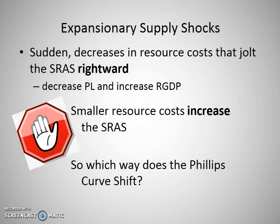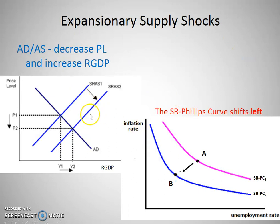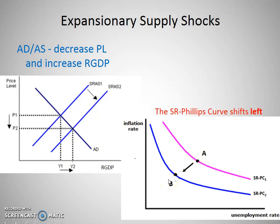The other curve on the ADAS model is the SRAS. Shifting the SRAS in the short run is usually caused by supply shocks. An expansionary supply shock is where the SRAS shifts to the right — this happens when input costs used in the production of most goods decrease. When the SRAS shifts to the right, the price level goes down and output goes up. To show that — price level going down and unemployment going down — the only way to represent it is by shifting the SRPC. So when you have a shift of the SRAS, you have a shift of the SRPC, and it goes in the opposite direction.